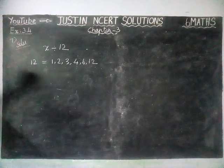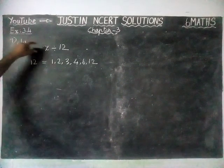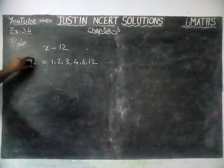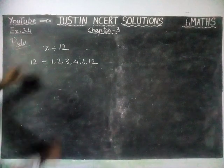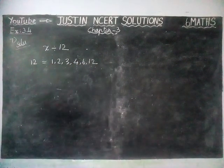If a number is divisible by 12, then definitely that number is always divisible by its factors.